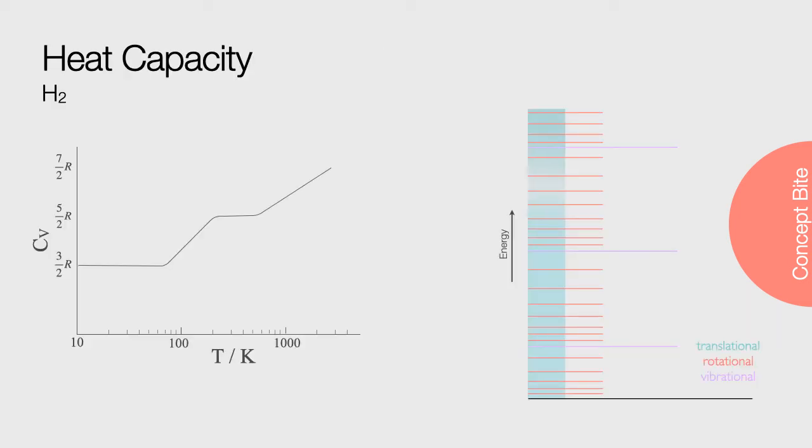This can be seen if we look at how the heat capacity at constant volume changes for molecular hydrogen as we increase the temperature. We can see at very low temperatures, less than 80 Kelvin, the heat capacity is constant at three halves R, as only the translational energy levels are occupied.